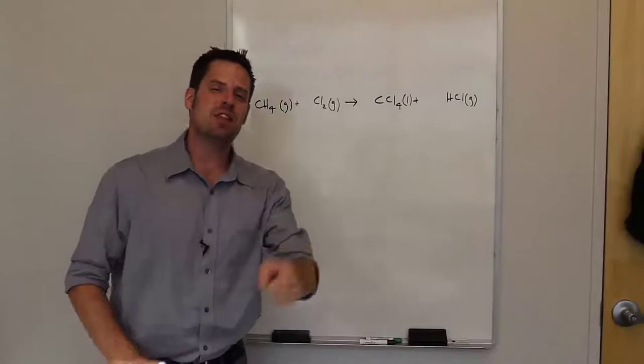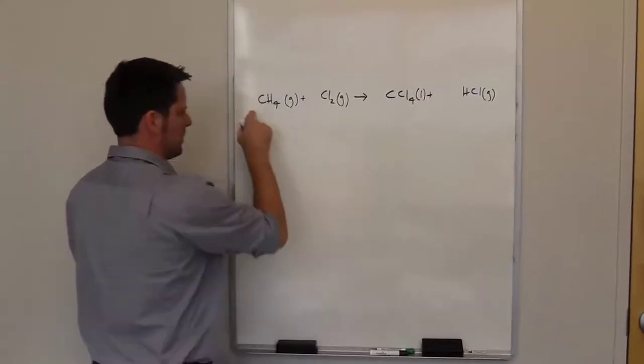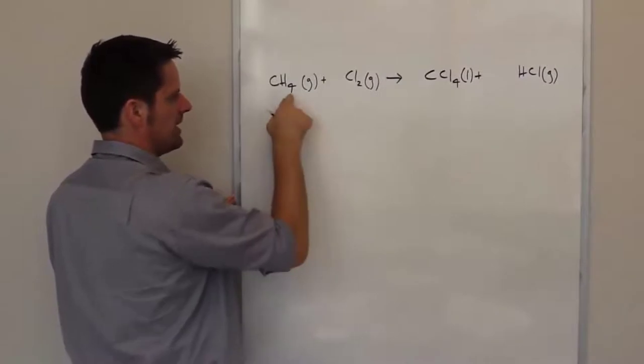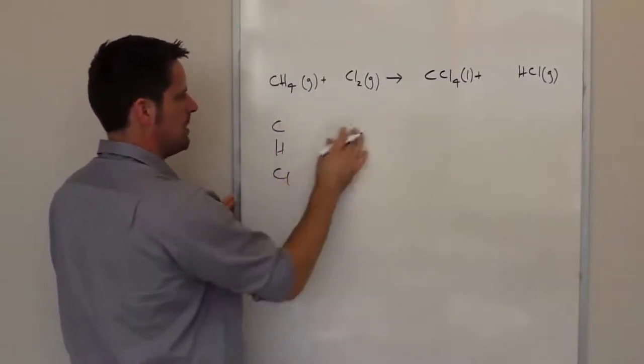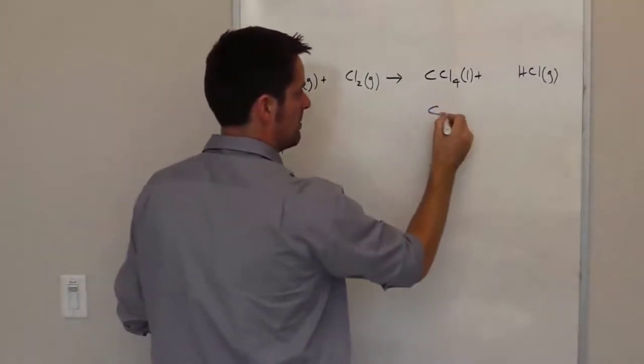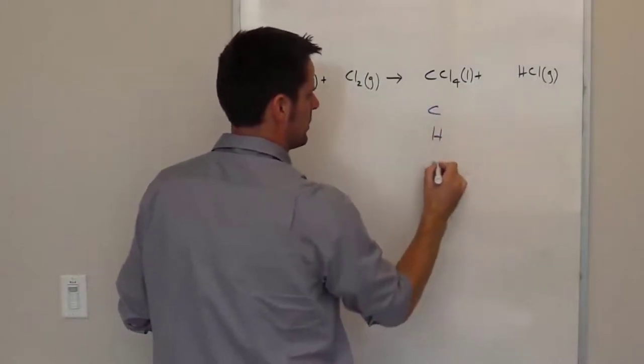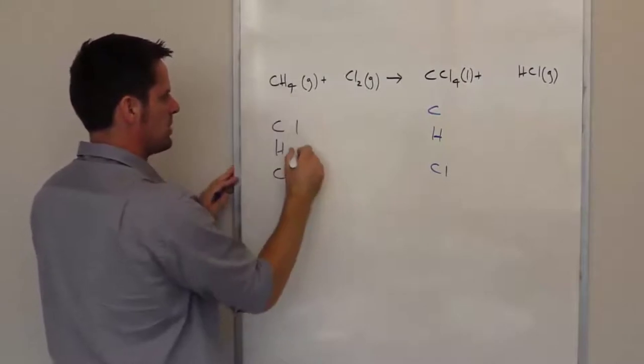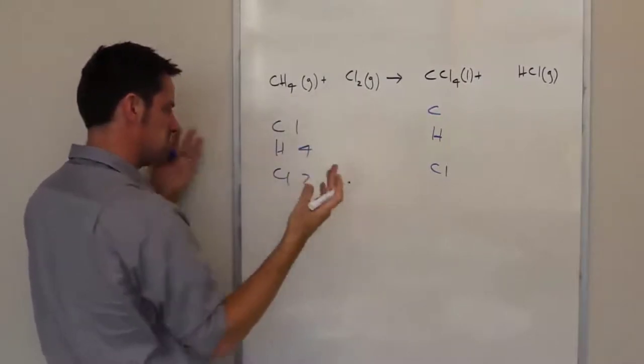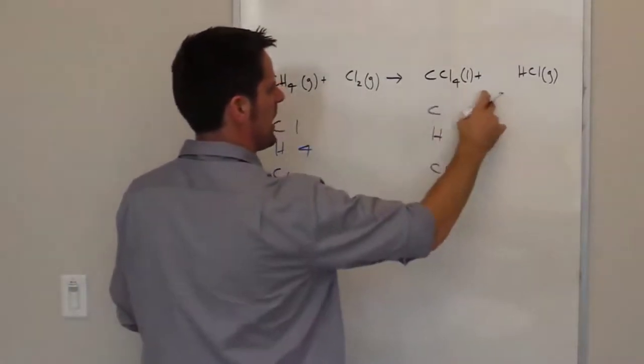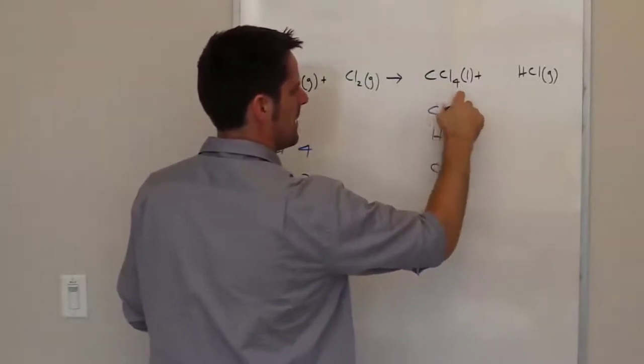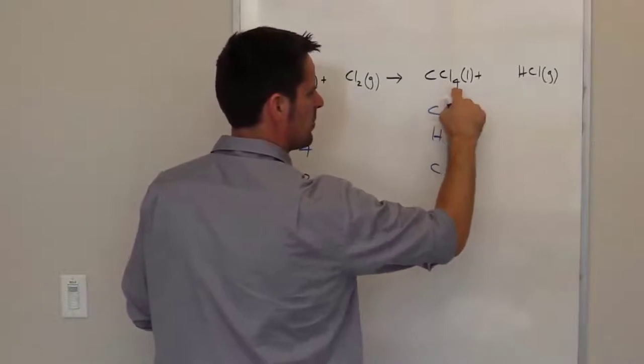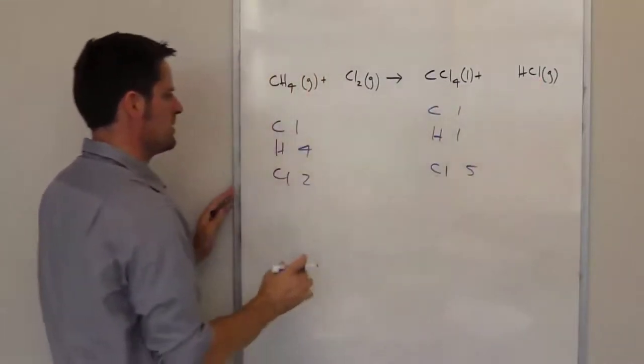For this one, we'll follow the same process. Looking at the left side going left to right, I've got carbon, hydrogen, and chlorine atoms. Over here on the right, I've got carbon, and presumably hydrogens and chlorines. We've got one carbon atom, four hydrogen atoms, and two chlorine atoms on the left. On the right I've got one carbon, one hydrogen, and five chlorines.